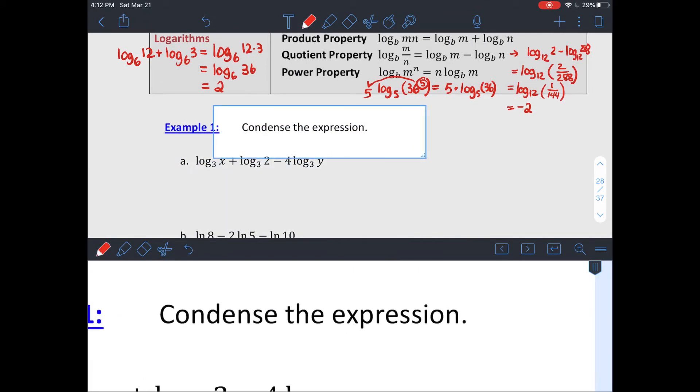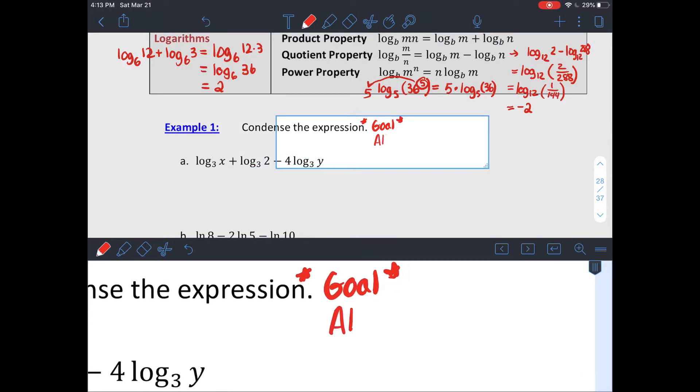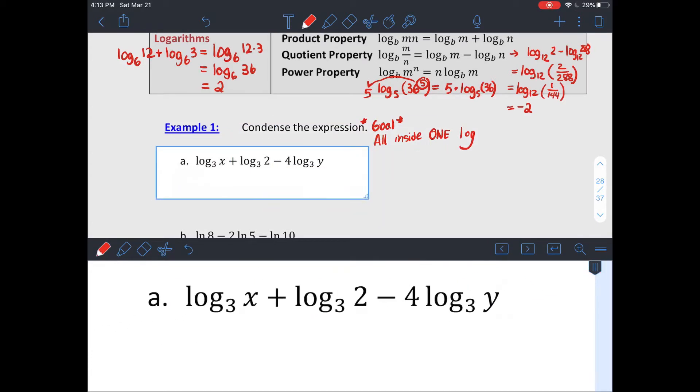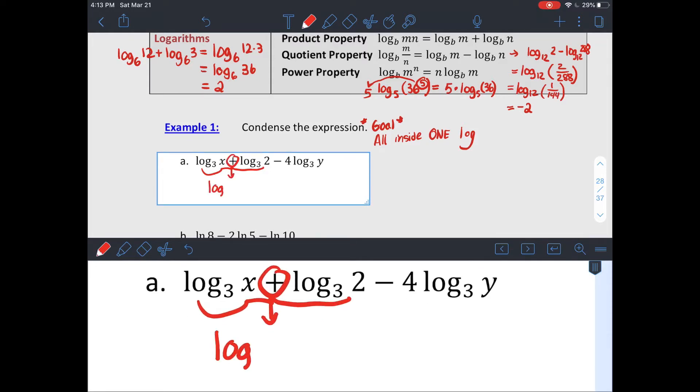So we're going to work with those three properties to condense some logarithms. When you condense, the goal is to get your logarithm written with every single thing inside of just one log. So if you have a whole bunch of logs being added or subtracted, we're turning it back into a single one. So property says if I have two logs being added, I can turn it back into a single log with the values inside being multiplied instead.